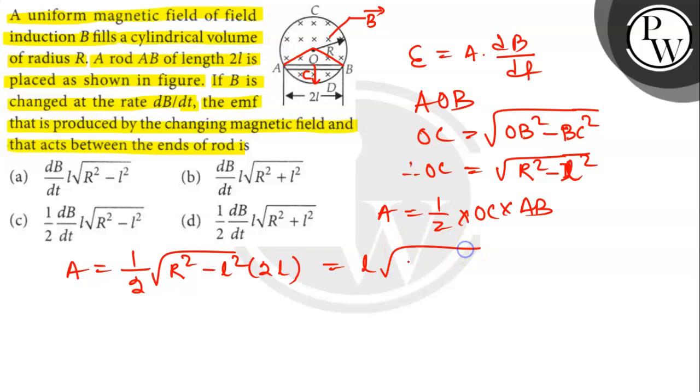So L root over of R square minus L square. EMF induced between the ends of the rod E is equal to dB/dt times L into root over of R square minus L square.